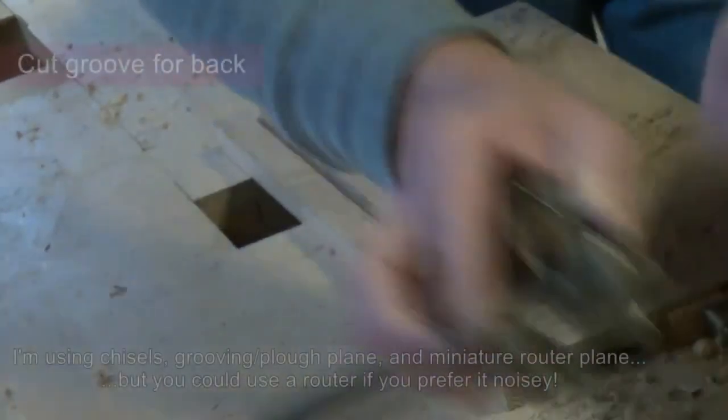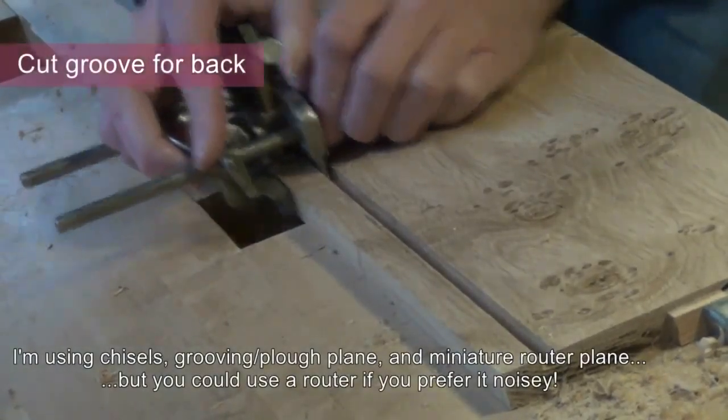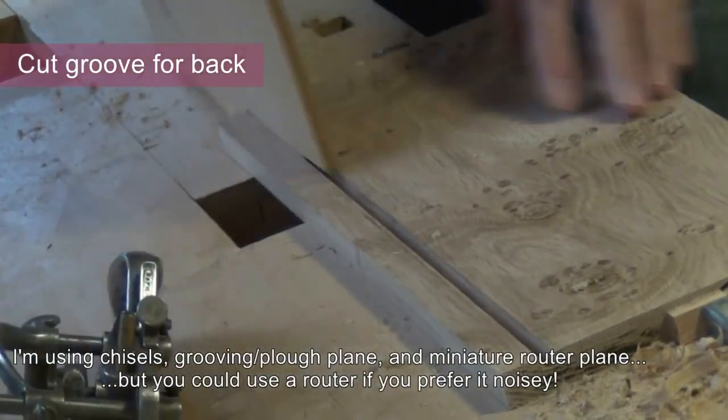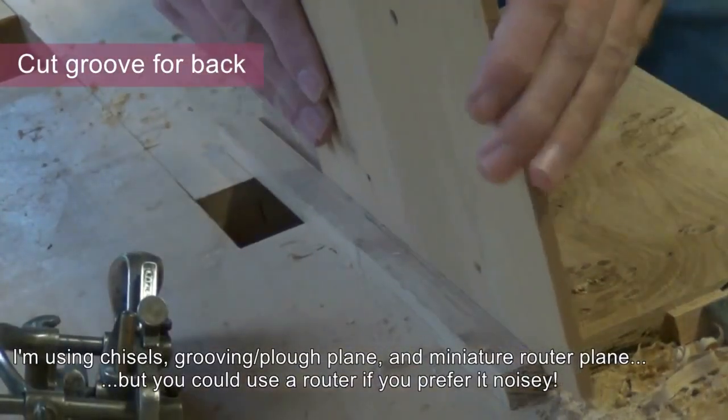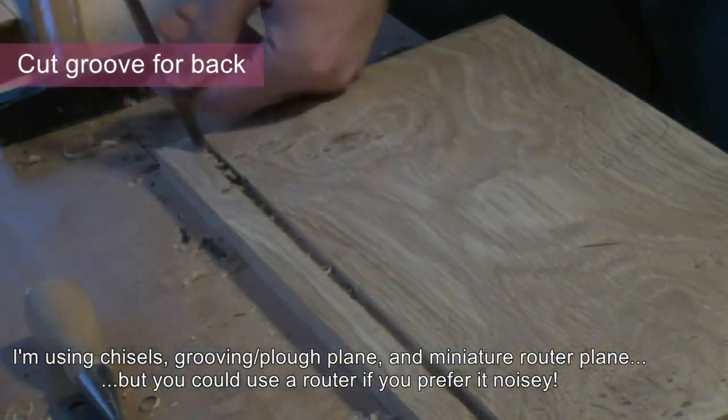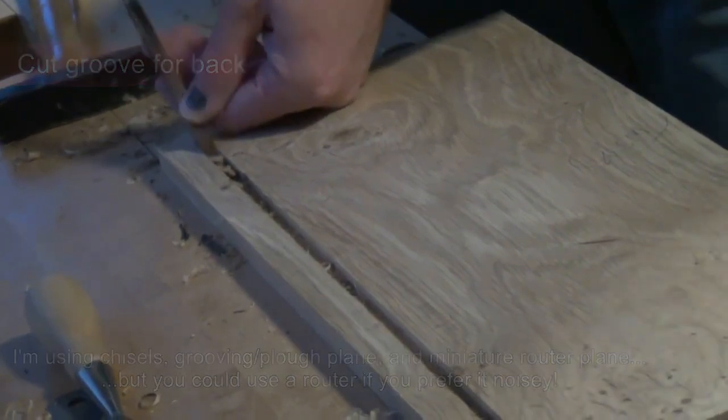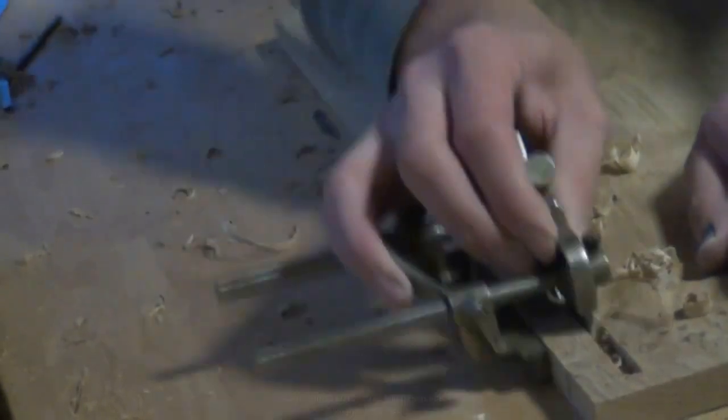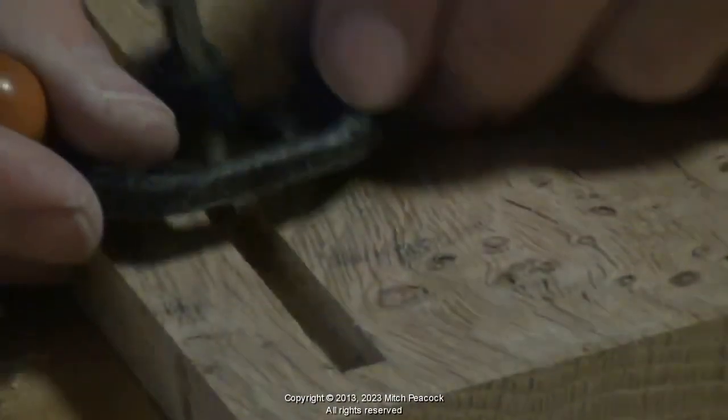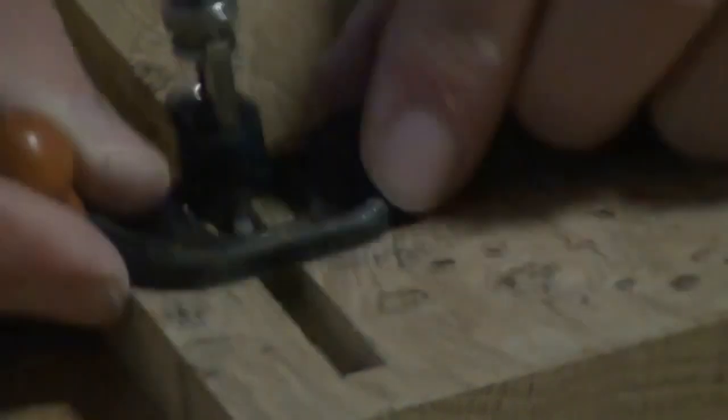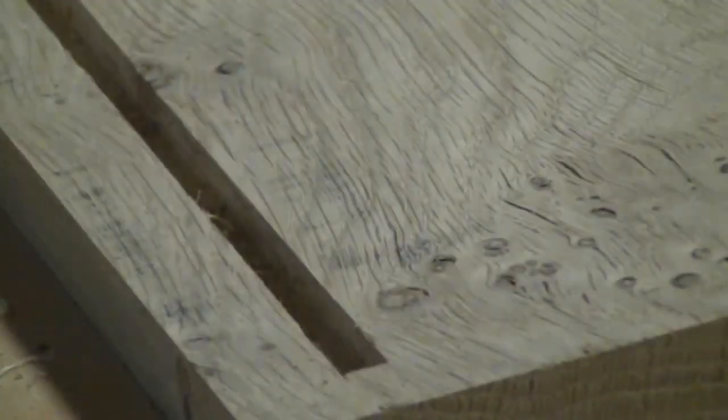Then I can set up my grooving plane to run a groove around the back of the components to take the back of the box. The grooves on the top and bottom need to be stopped so at the ends we need to chop them out with the mortise chisel. Of course you could do these grooves with a router but I like the enjoyment of doing it by hand. It's a lot less dusty.